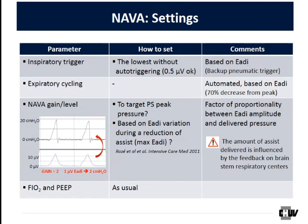Practically, how do we set NAVA? There is an inspiratory trigger based on the E-ADI signal, with a backup pneumatic trigger as security if the E-ADI signal is lost. The trigger threshold should be set as low as possible without causing auto-triggering; the default value of 0.5 is usually adequate. Expiratory cycling cannot be adapted — it is automated and based on E-ADI, cycling off when E-ADI decreases to 70% of the peak value reached earlier during the respiratory cycle.